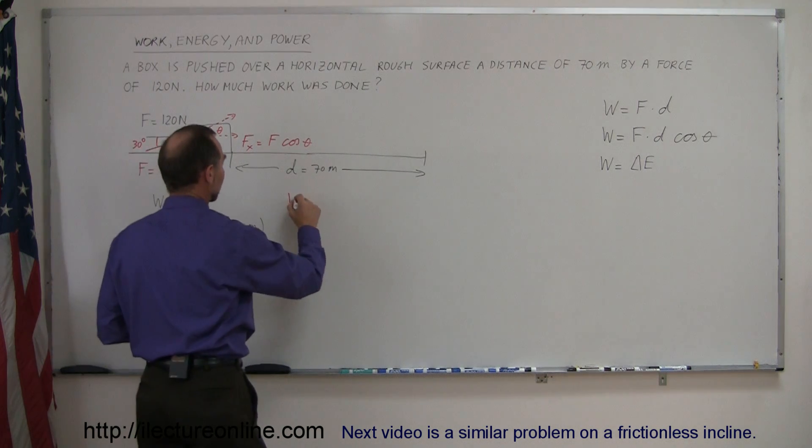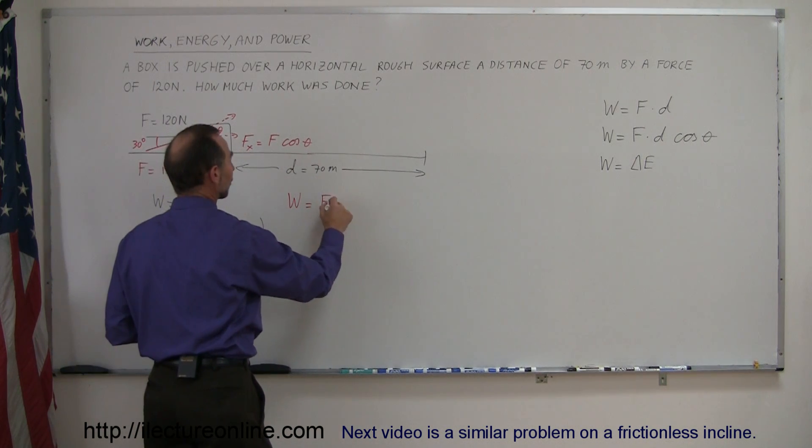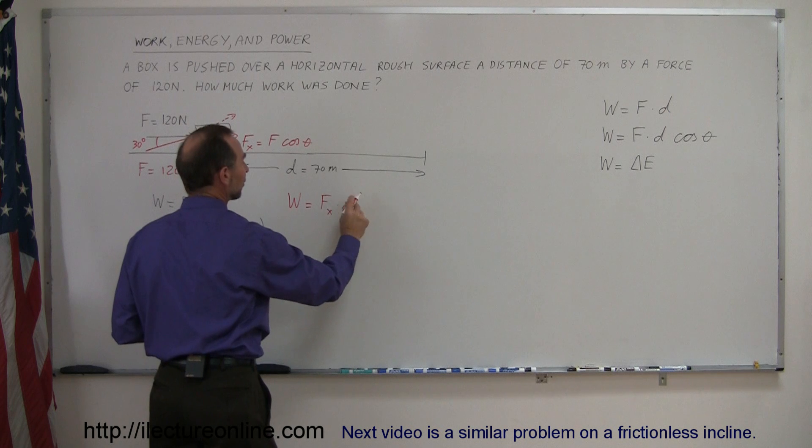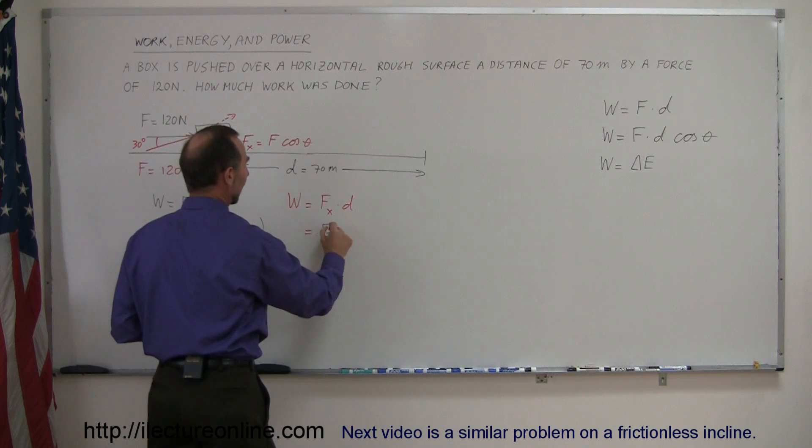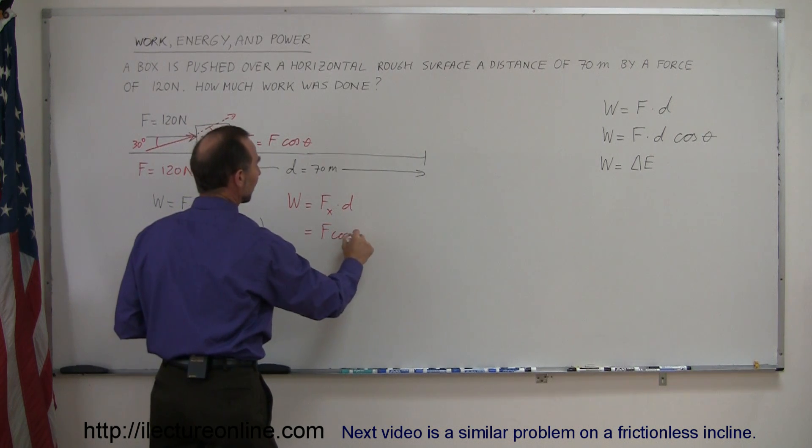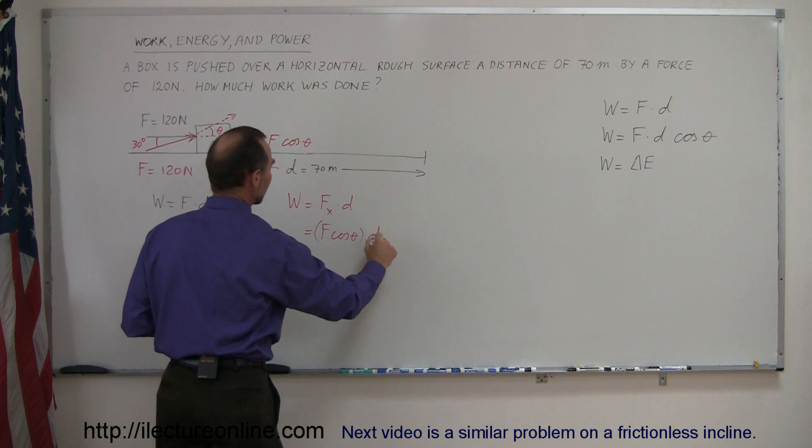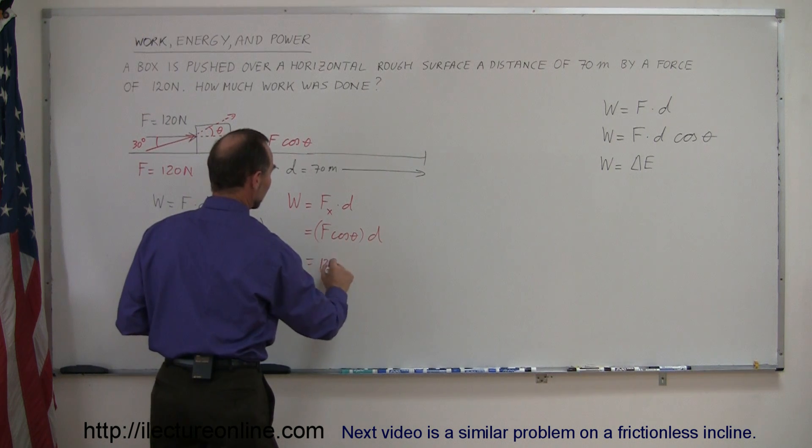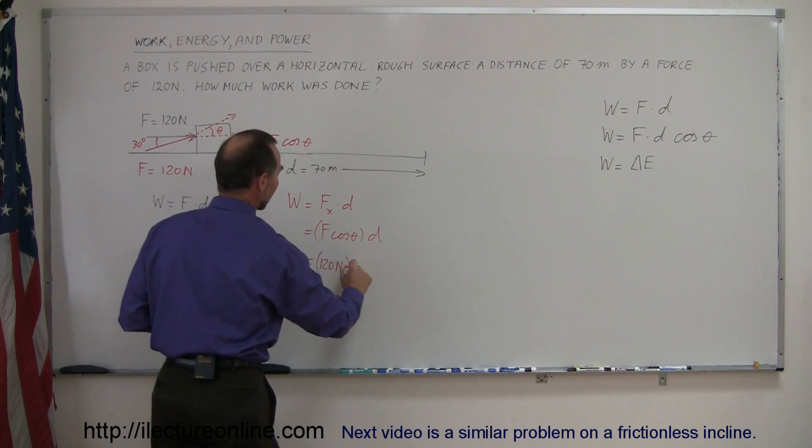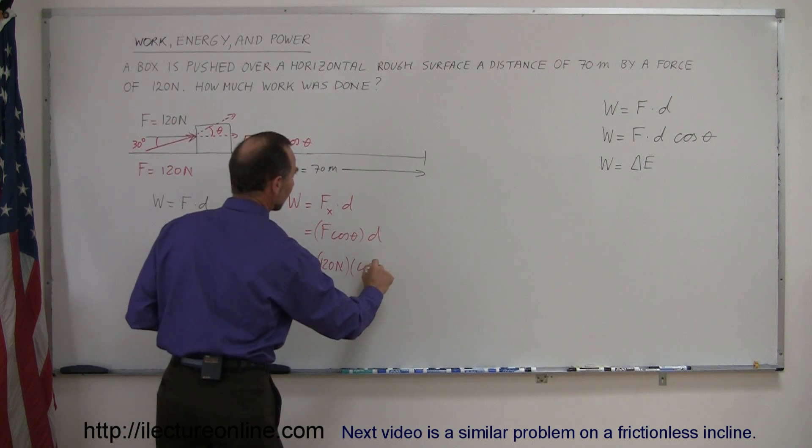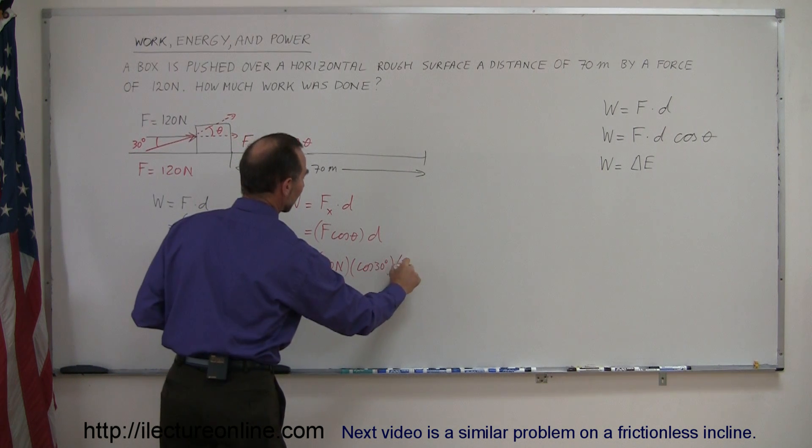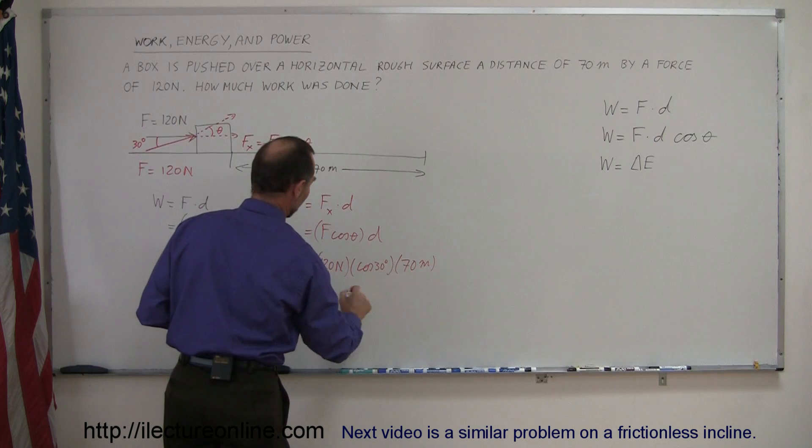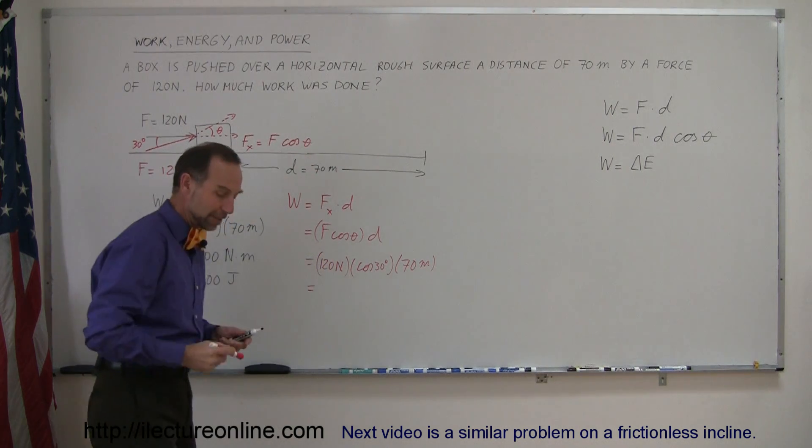And then, working out the problem, we get work is equal to the force in the x direction times the displacement in the x direction, which is equal to F times the cosine of theta times the displacement, and so in this case it would be 120 newtons times the cosine of 30 degrees times the displacement of 70 meters, and then the answer would of course be different.